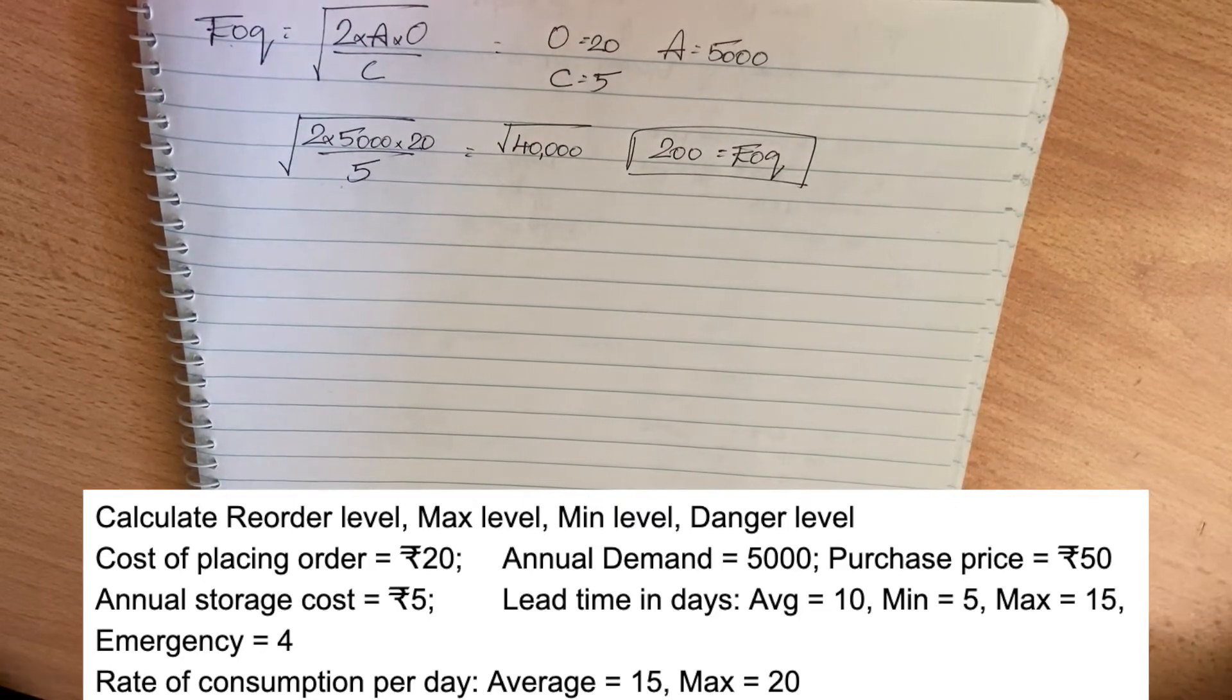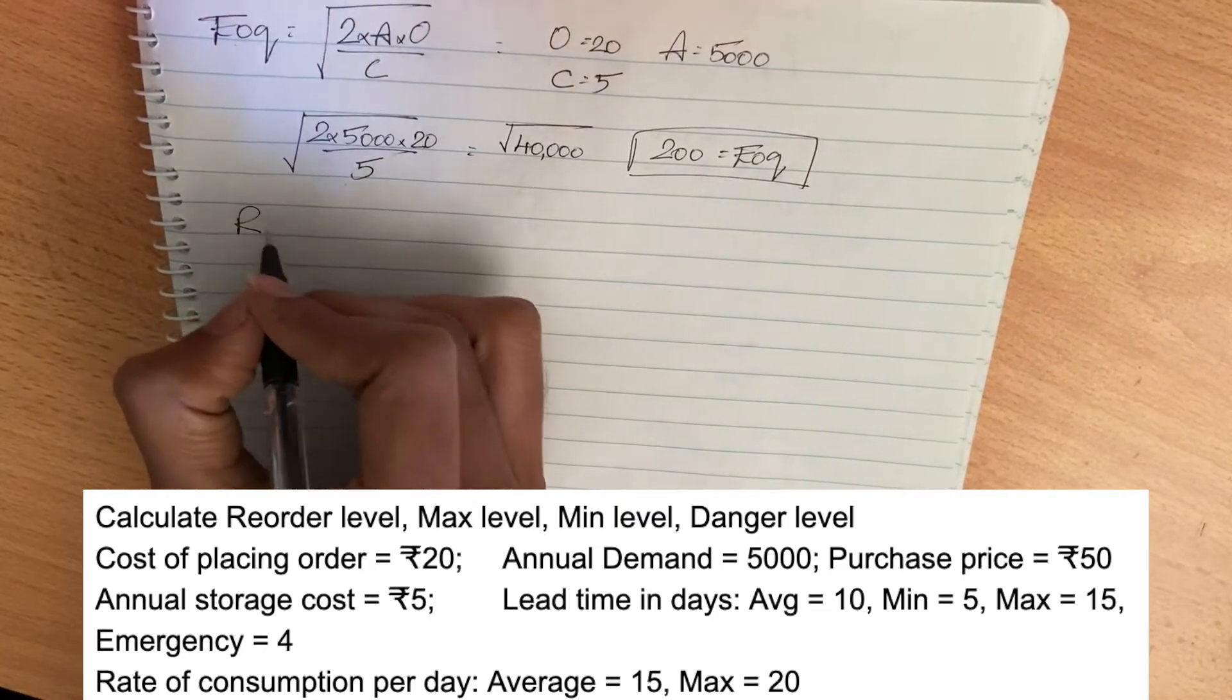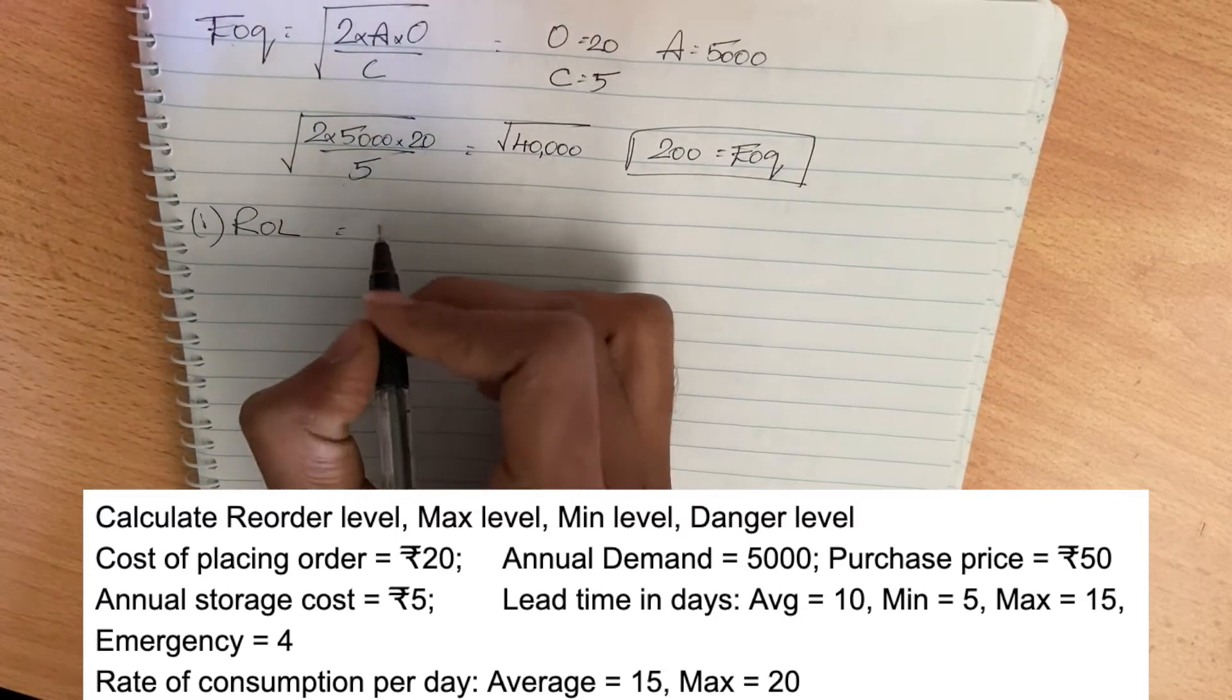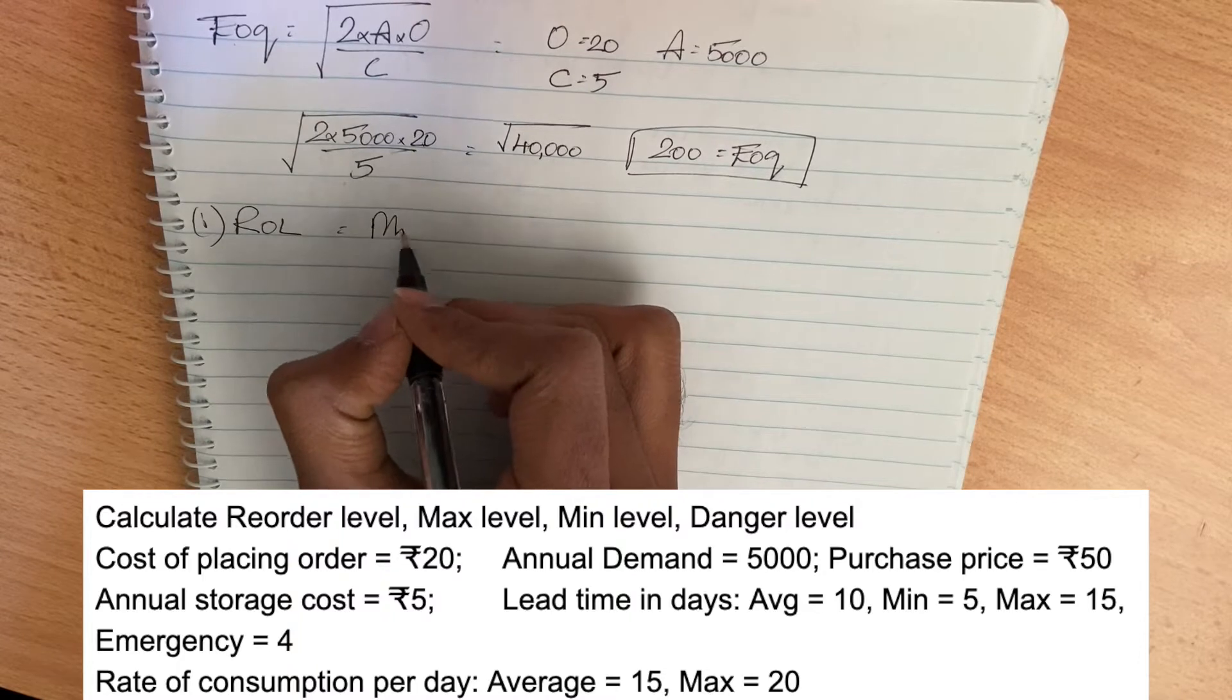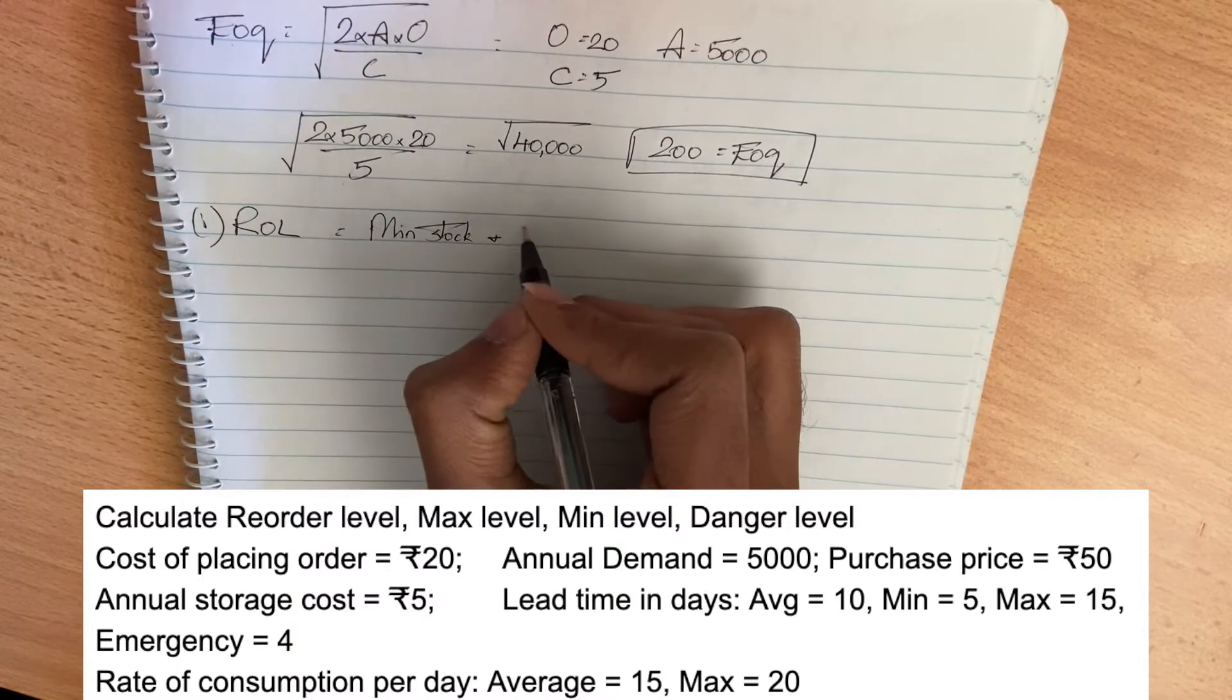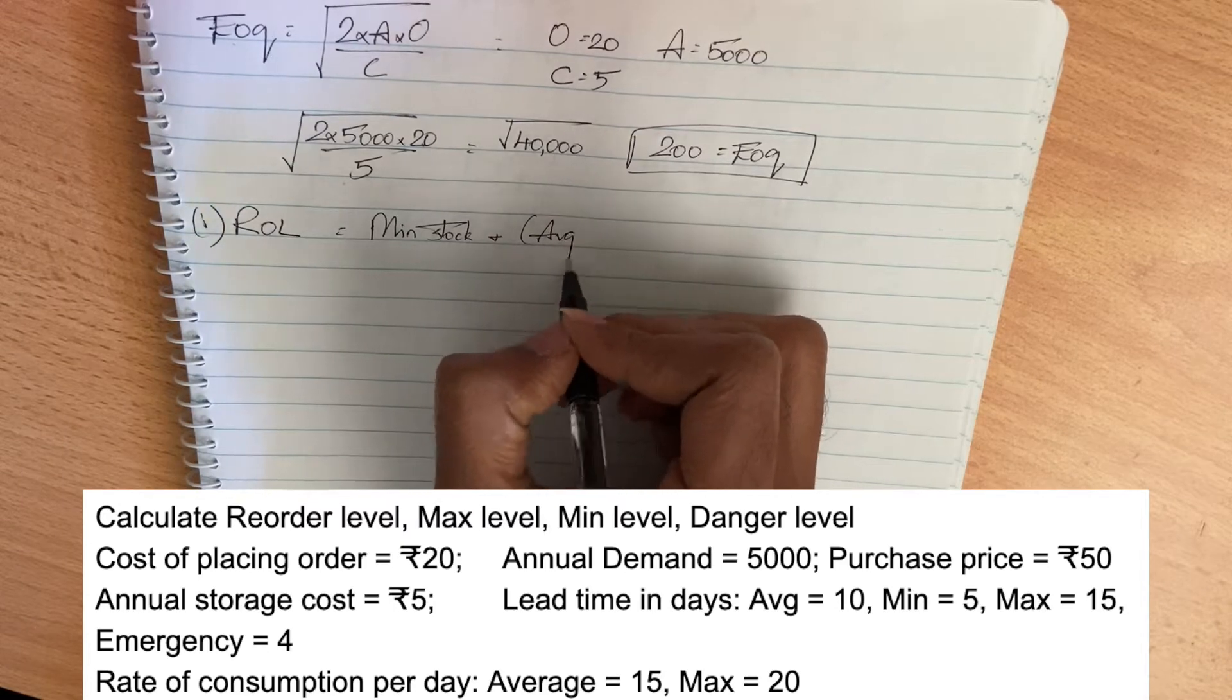Next is reordering level. The reordering level formula is minimum stock plus average consumption into delivery period.